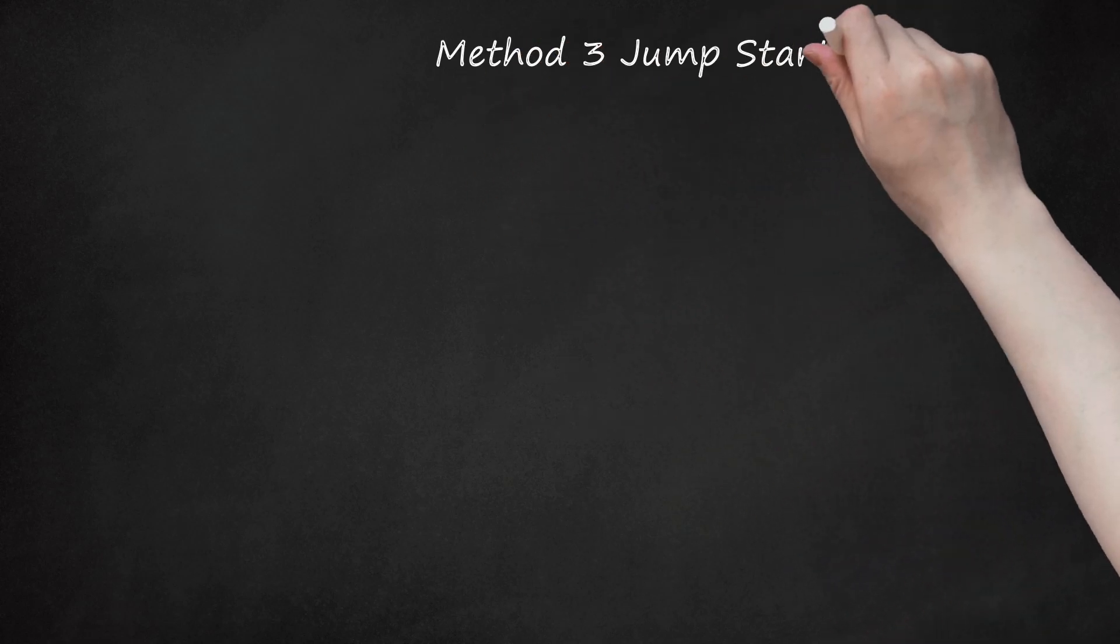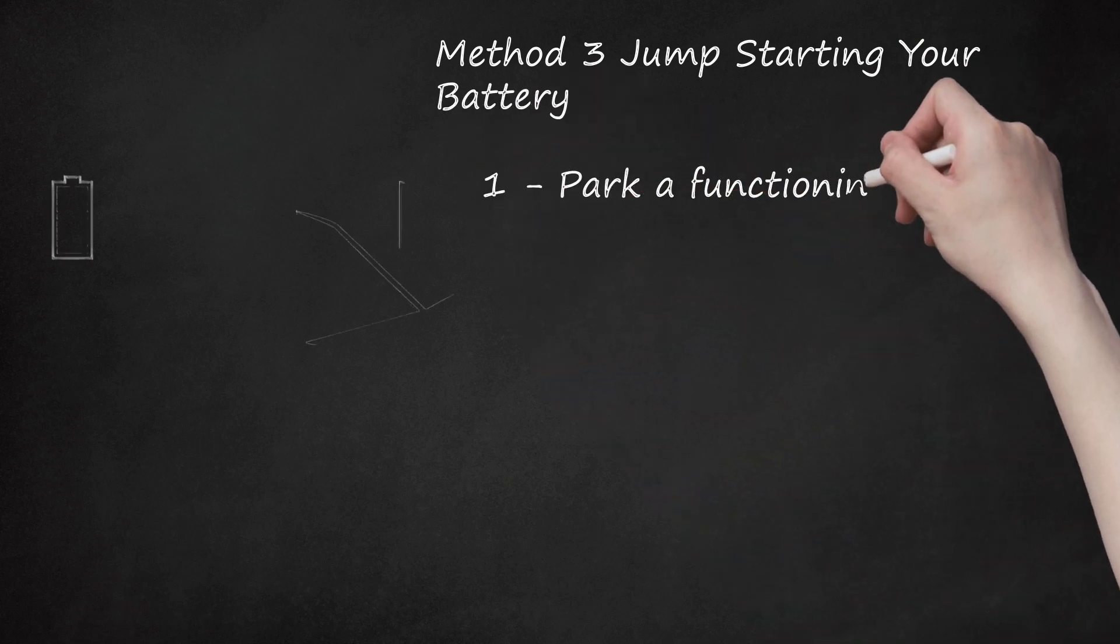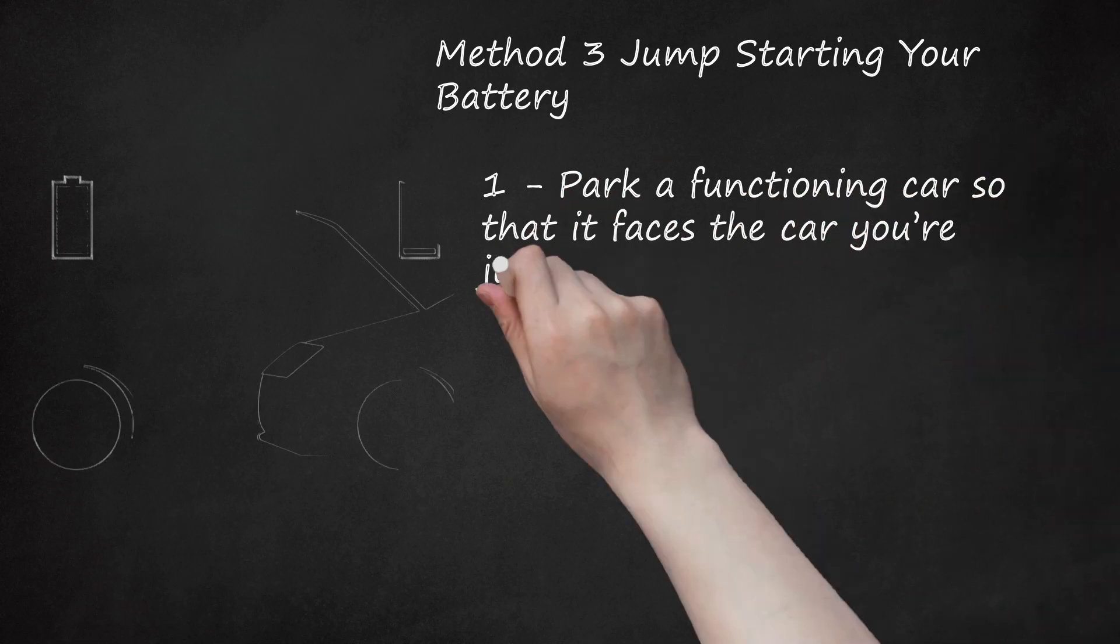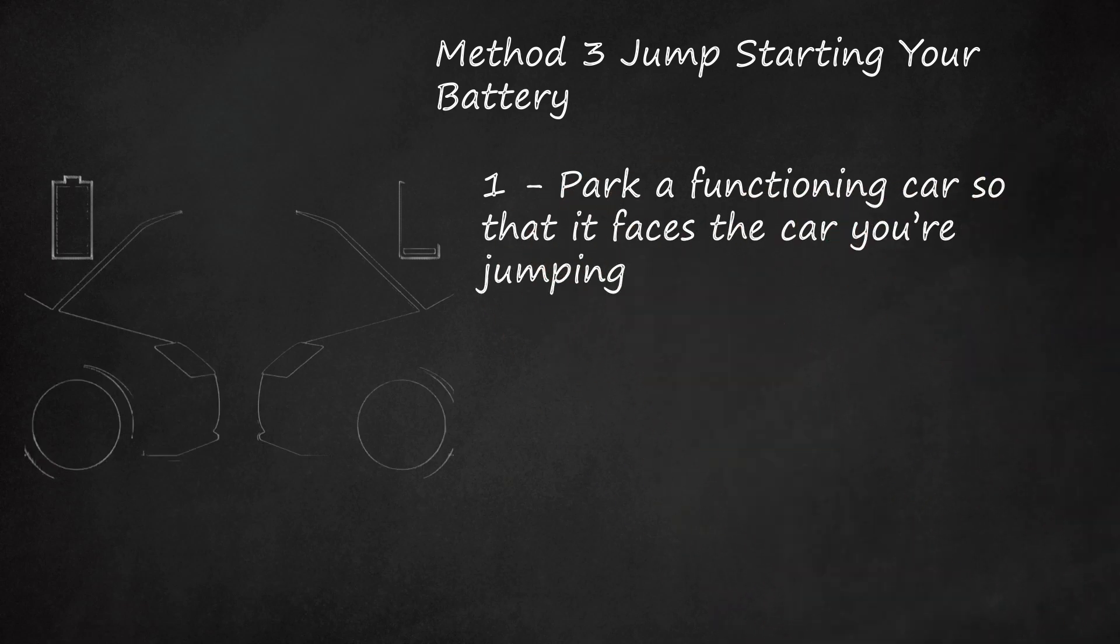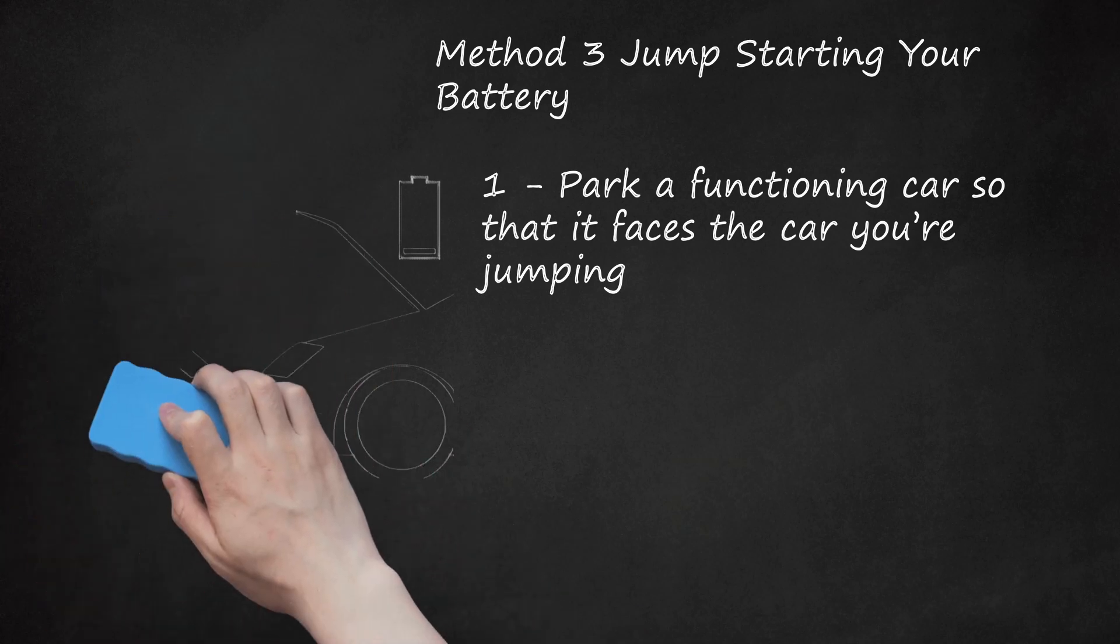Method 3: Jump Starting Your Battery. Park a functioning car so that it faces the car you're jumping. Jump starting a vehicle involves using the electrical system of another running vehicle to charge the battery in yours sufficiently to allow it to start and charge itself. Before parking the functioning car, make sure you locate the battery in both vehicles, as some vehicles' batteries can be found in the trunk. Once you have located the batteries in both vehicles, pull the running vehicle up to yours close enough to allow your jumper cables to connect both batteries. If the battery is in the trunk of one of the vehicles, back it up to the other so the cables can reach. Set the parking brake on both vehicles to ensure they don't move during the charging process.